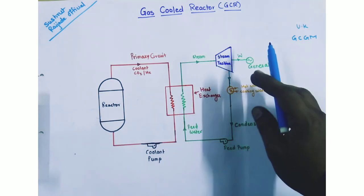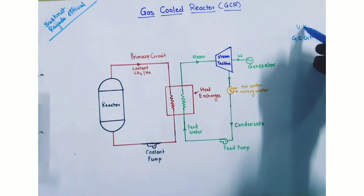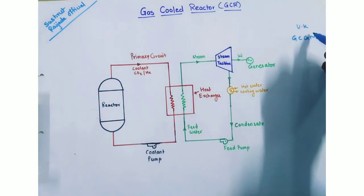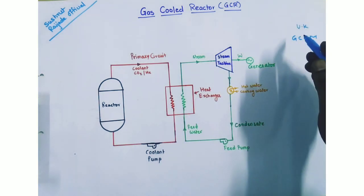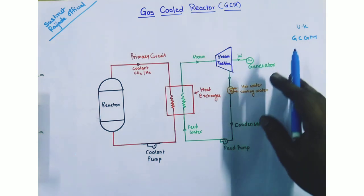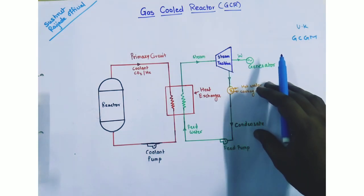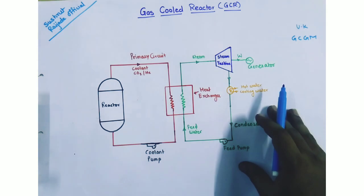Gas cooled reactor was first developed in UK. It uses CO2 as a coolant instead of water, and graphite as a moderator.